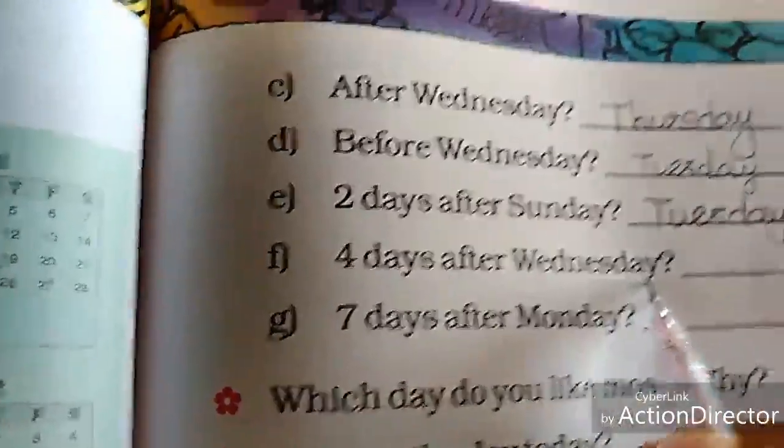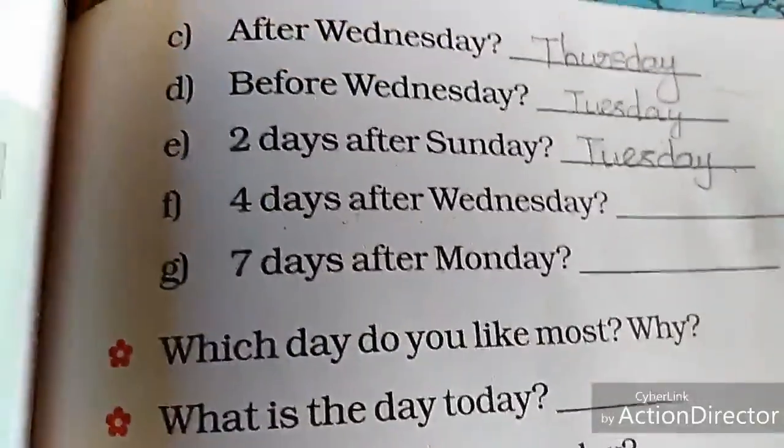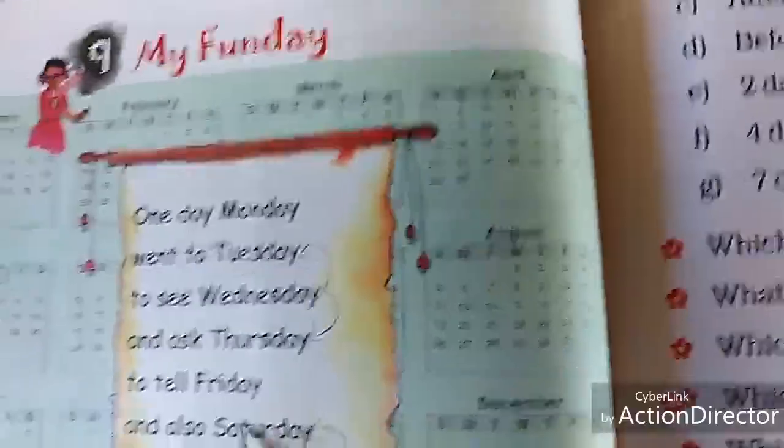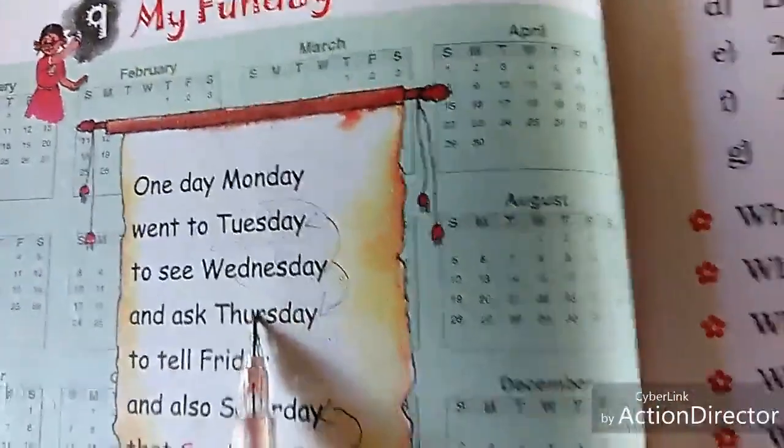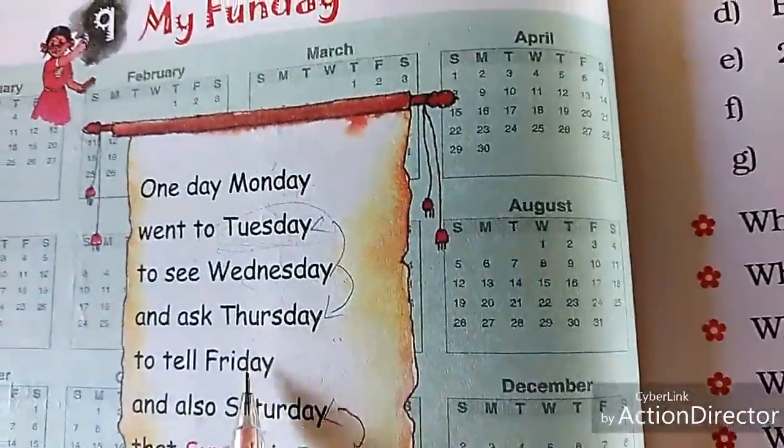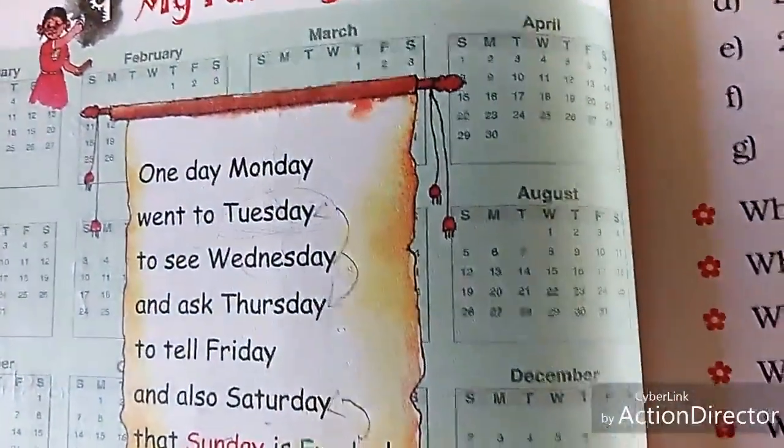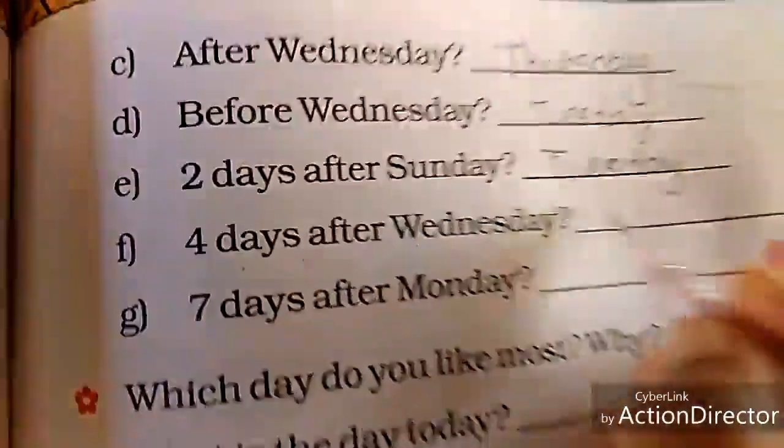Four days after Wednesday — Wednesday after four days: Thursday, Friday, Saturday, and Sunday. Sunday is the fourth day.